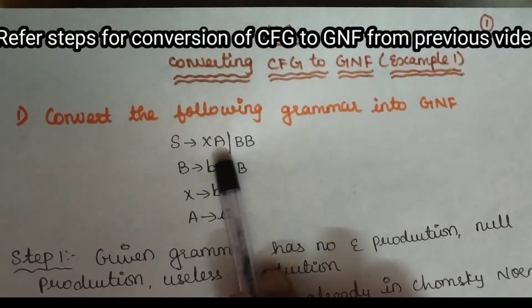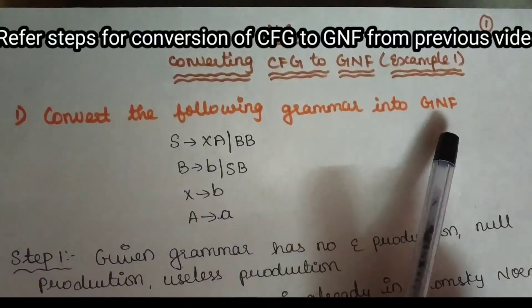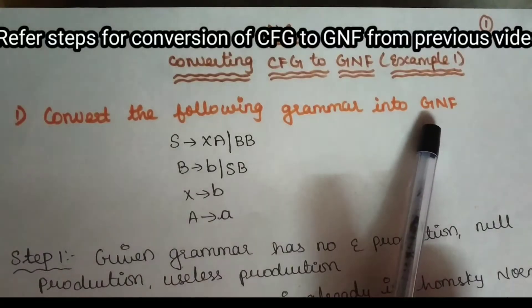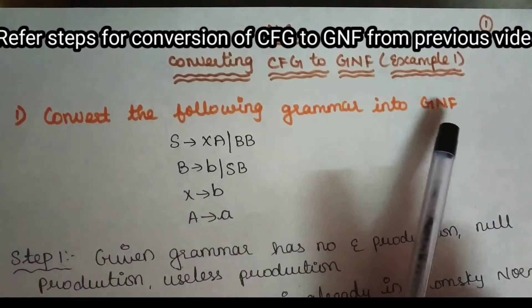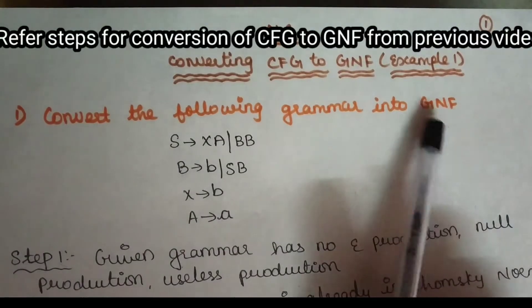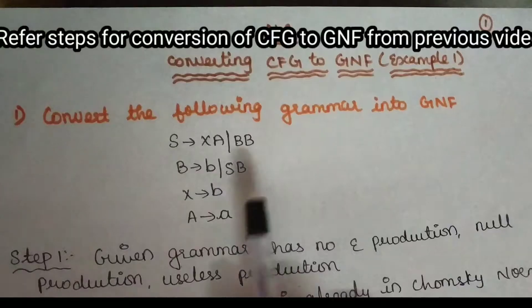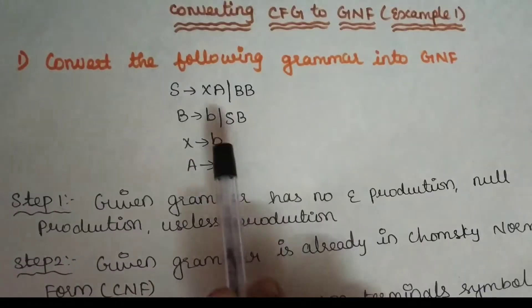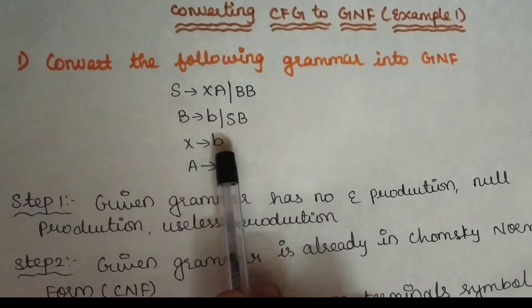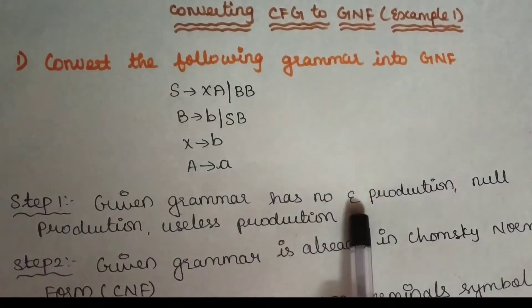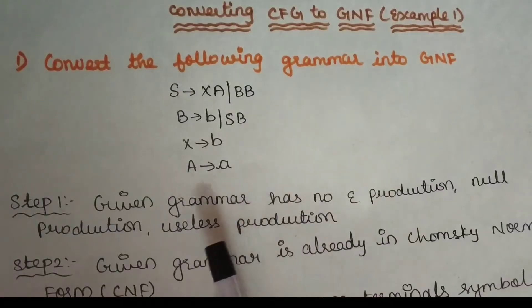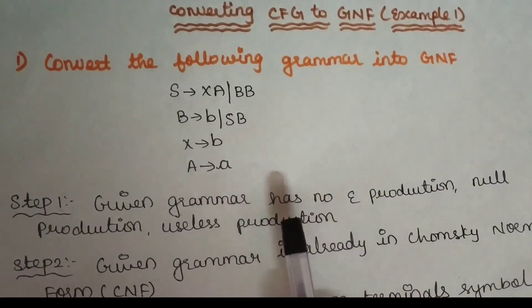The first step is to check the grammar. We will check if there is any null production, unit production, or useless symbols.